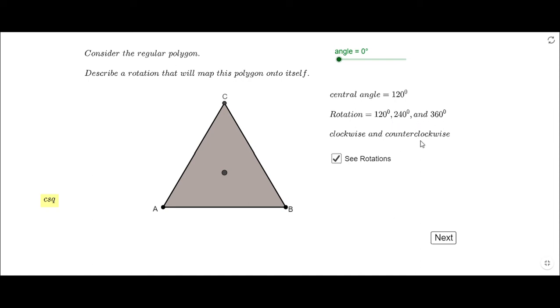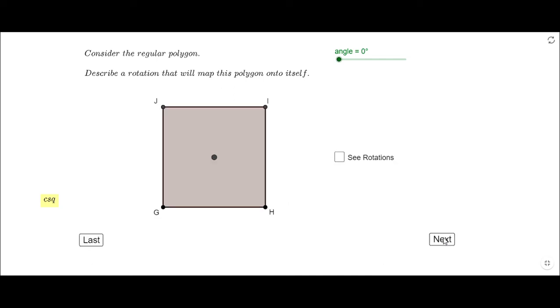I'm going to uncheck this and go to the next polygon which is a regular polygon of four sides, which if you call it a square, that is correct.